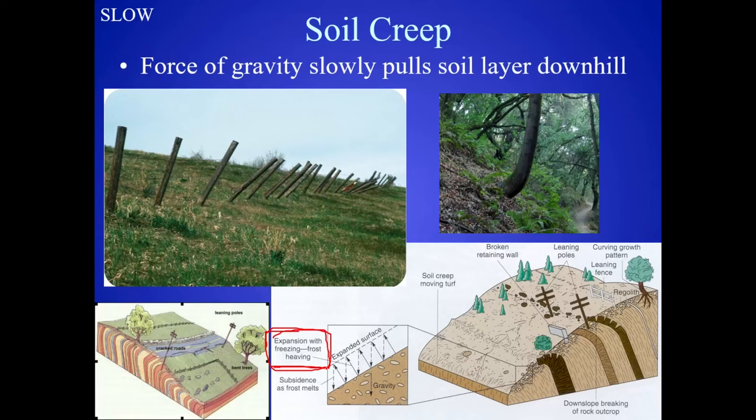With constant freeze-thaw cycles, soils will slowly loosen and start to creep downhill. You might have seen a tree where the trunk is growing kind of straight out and then turns — that happens on steep hillsides where there's soil creep. What's happening is that tree kind of fell over, then righted itself, then fell over again and righted itself — and it gets a curved trunk like that.